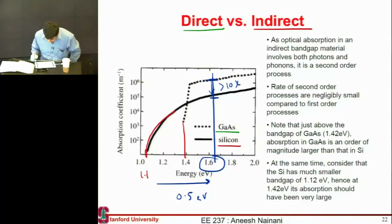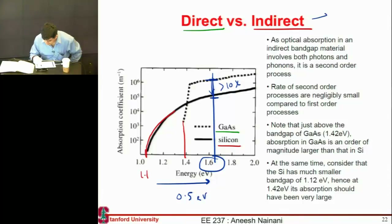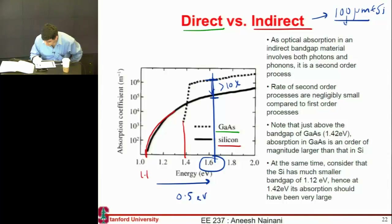This explains why you need a thicker cell if you are making solar cells with silicon. Typically, people have tried to reduce the silicon thickness to between 100 to 200 microns.